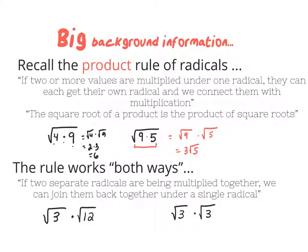This rule works both ways. If two things are multiplied under one square root, I can break them up into two. But if there are two square roots being multiplied, I can join them back together under one. That's often beneficial because it simplifies the problem. I don't know what the square root of 3 is or the square root of 12, but if I join them together I get the square root of 36, which I know.